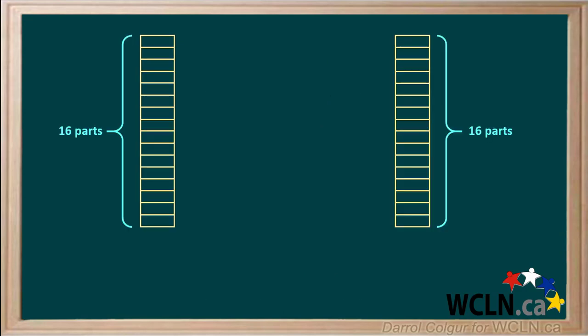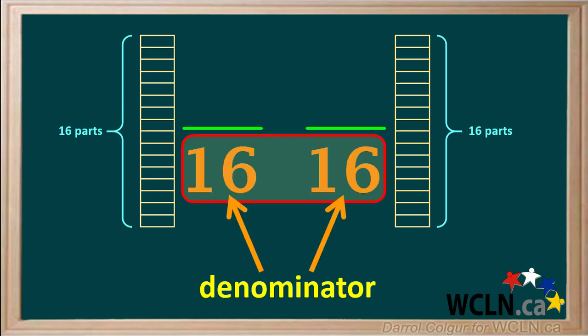Now we'll divide each of the two rectangles into 16 parts, so fractions based on these will both have a denominator of 16. We can also say they have a common denominator of 16.